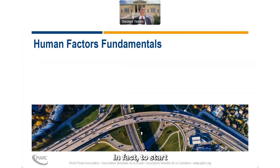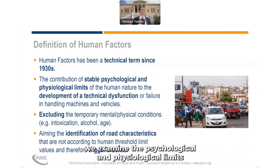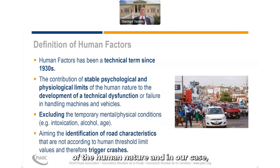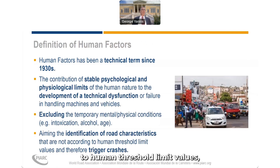To start with the fundamentals, human factors is a scientific discipline where we examine the psychological and physiological limits of human nature — in our case, for traffic and safety. The aim is to identify road characteristics that are not according to human threshold limit values and, therefore, they might lead to crashes.